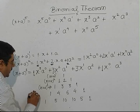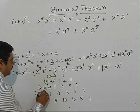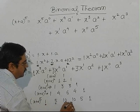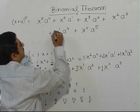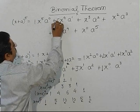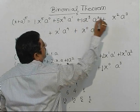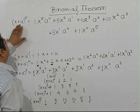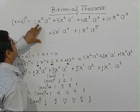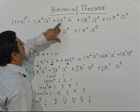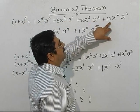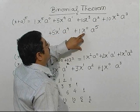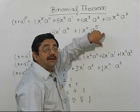The coefficients come from Pascal's Triangle row for power 5: 1, 5, 10, 10, 5, 1. So the full expansion of (x + a)^5 is: x^5 + 5x^4·a + 10x^3·a^2 + 10x^2·a^3 + 5x·a^4 + a^5.